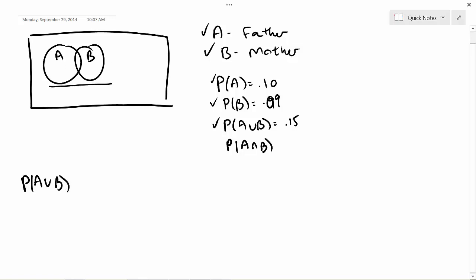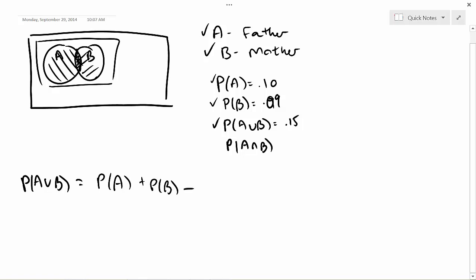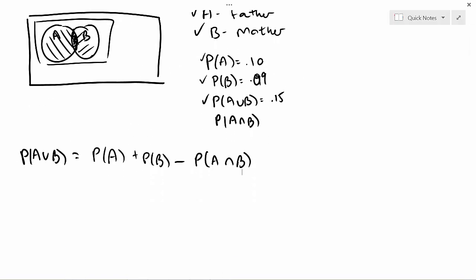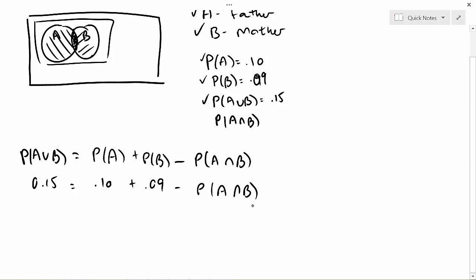The probability of A∪B — both circles together — equals the probability of A plus the probability of B, and then minus the probability of A∩B, because we've added the middle part in twice, so we subtract it out. Now we can plug in: 0.15 = 0.10 + 0.09 minus the probability of A∩B, which gives us 0.15 = 0.19 minus the probability of A∩B.